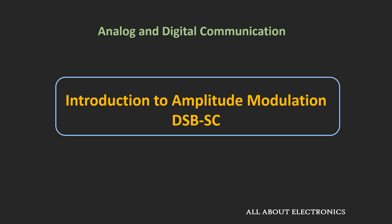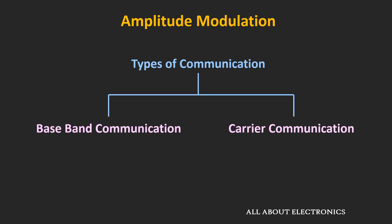Amplitude Modulation is one form of carrier communication. Before we jump into Amplitude Modulation, we should be aware about two types of communication: baseband communication and carrier communication. First, let's briefly talk about baseband communication.